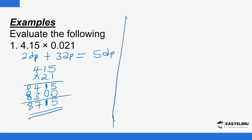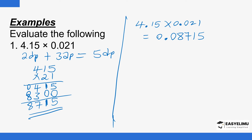The required number of decimal places is 5, but these digits are 4. So I insert 1 zero in between the decimal point and the digits. This means 4.15 times 0.021 equals 0.08715 — I've inserted one zero between the decimal point and the digits because the digits are 4 but I need 5 decimal places.